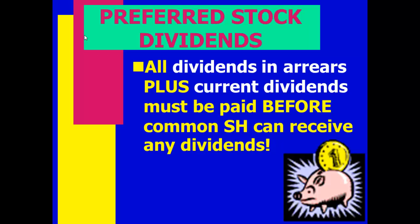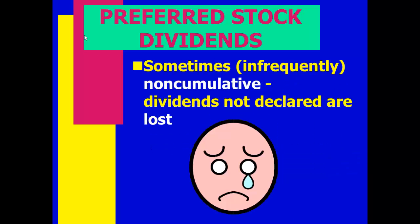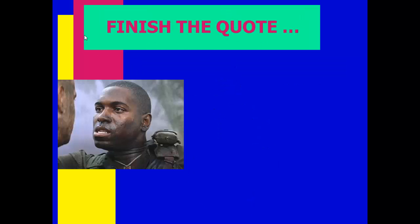What we owe to the preferred is their dividends in arrears plus the current year amount. Dividends only become a liability when declared, so arrears are not yet a liability. Preferred stock could be non-cumulative — if it's non-cumulative and we don't declare the dividend one year, it's gone. As a stockholder, you'd prefer cumulative stock because if they don't declare it one year, you'll still get your money later.